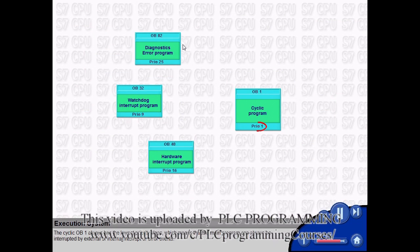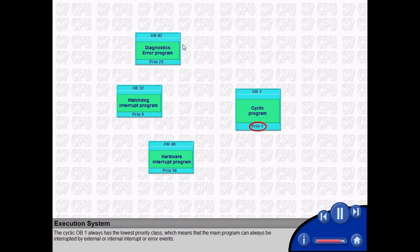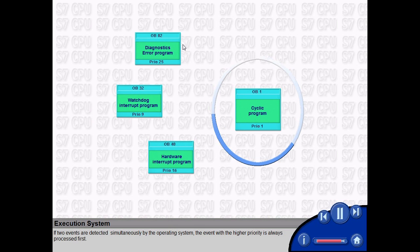The cyclic OB1 always has the lowest priority class, which means that the main program can always be interrupted by external or internal interrupt or error events. If two events are detected simultaneously by the operating system, the event with the higher priority is always processed first.